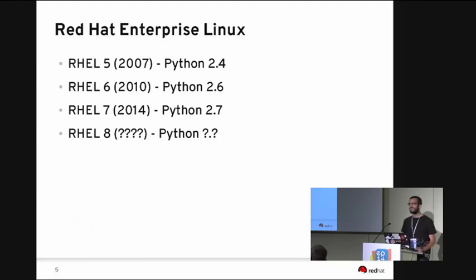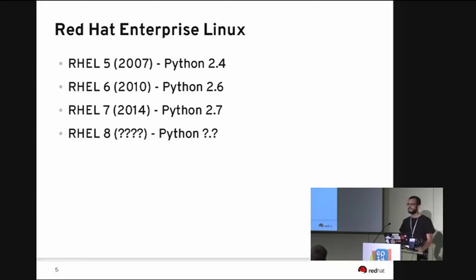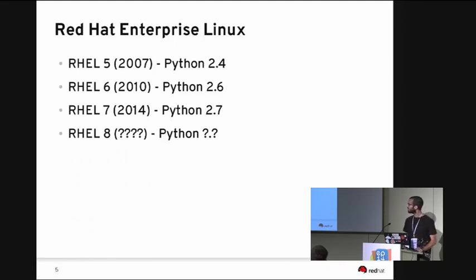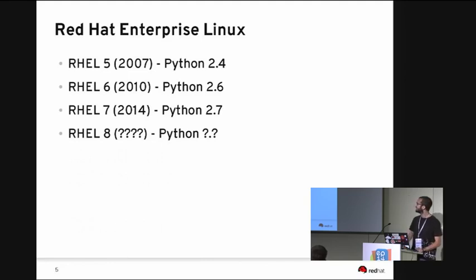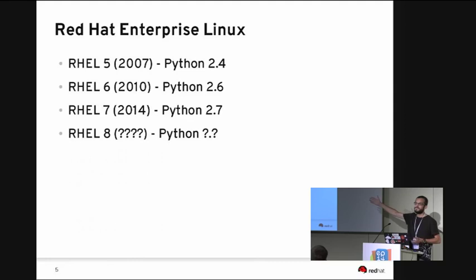We currently have three supported releases of Red Hat Enterprise Linux — shortly RHEL — that's 5, 6, and 7. They have these Python versions. Maybe sometime in the future we will also release RHEL 8, and you can sort of extrapolate from the years when that might be, but you can't really extrapolate the Python version.